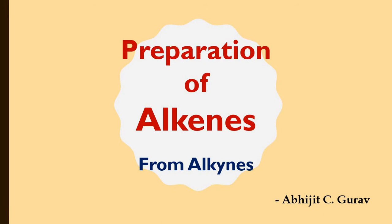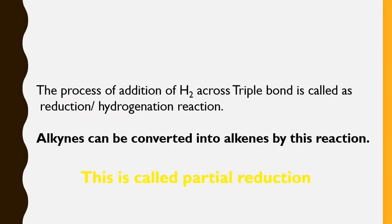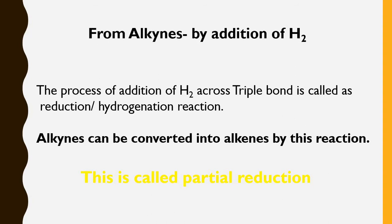The reaction involves conversion of a triple bond into a double bond — that is, from alkynes to alkenes. The process of addition of hydrogen across the triple bond is called reduction or hydrogenation reaction. By addition of hydrogen, we are converting alkynes into alkenes, so this reduction is also called a partial reduction reaction.